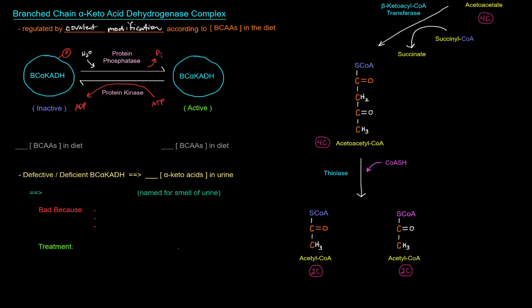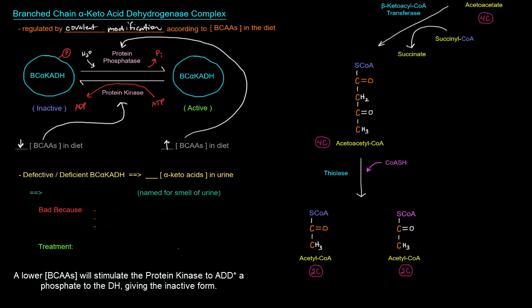So how does the concentration of BCAAs in the diet affect this? Well, if there is a higher amount of BCAAs in the diet, you want to be able to metabolize them. And so you want the active version. So a high concentration of BCAAs in the diet will stimulate this guy, the active form. And so what generates the active form? Well, the protein phosphatase. So the high concentration of BCAAs will trigger the phosphatase to remove the phosphate and give us the active form. Whereas if there's a lower concentration of BCAAs in the diet, you don't need to metabolize the BCAAs. And so you want the inactive form to be around. And so a lower concentration of BCAAs will stimulate the protein kinase to add a phosphate and give the inactive form. So this guy triggers this. This guy triggers that.